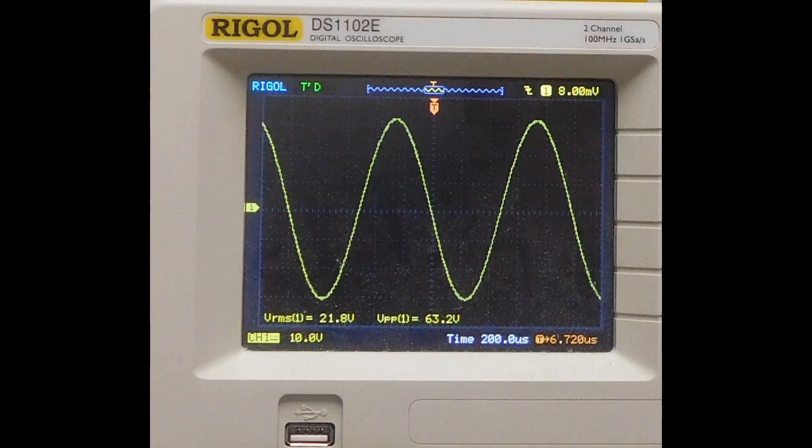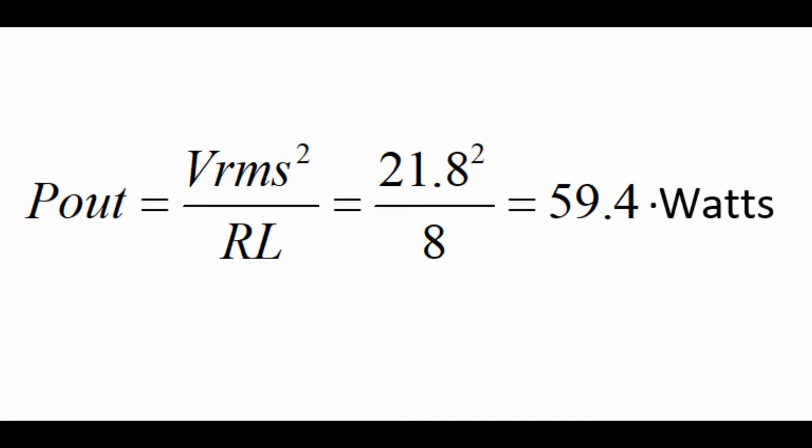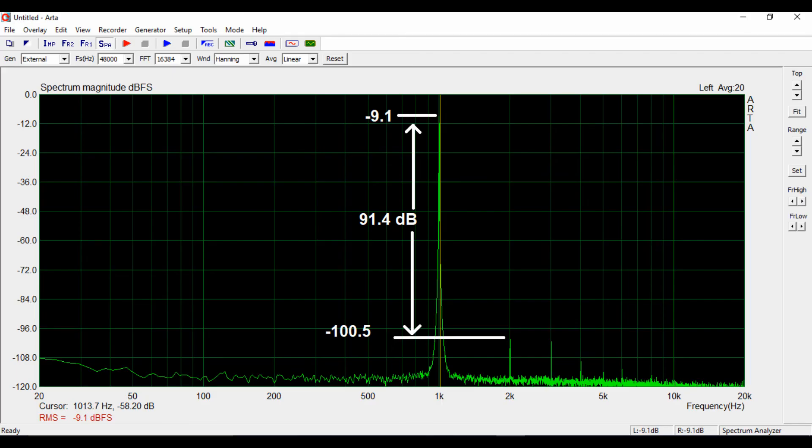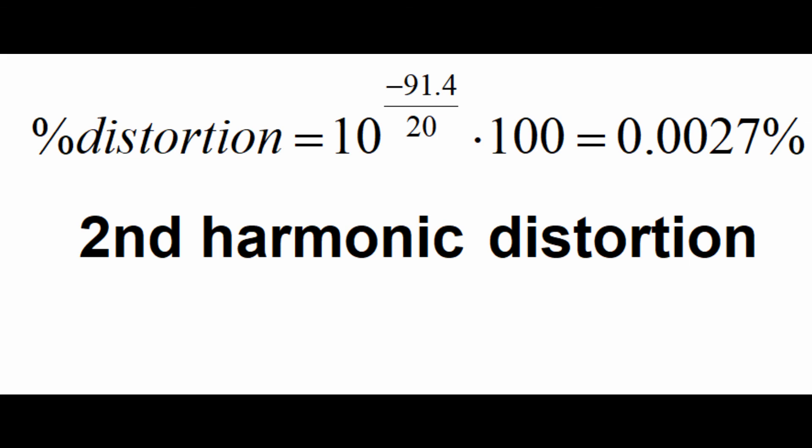The scope shows an output voltage of 21.8 volts RMS. That calculates out to 59.4 watts, and you'll notice at that particular power, all of the harmonics are still about 90 dB down or better with respect to the fundamental. That says that the GT102 power amplifier, delivering nine more watts than it's rated 50 watts, still has second harmonic distortion that's just 0.0027%.